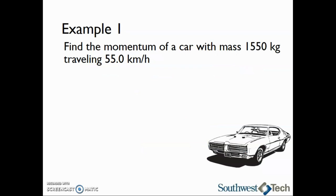Let's take a look at a basic momentum calculation. Find the momentum of a car that has a mass of 1550 kilograms traveling at 55 kilometers per hour. First, we will write down all of the information we were given in the problem statement. The mass is 1550 kilograms and the velocity is 55 kilometers per hour. We are trying to find the momentum, p.